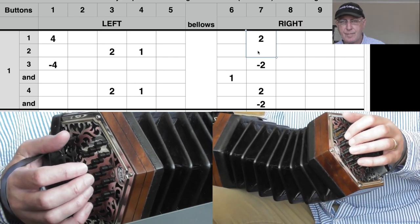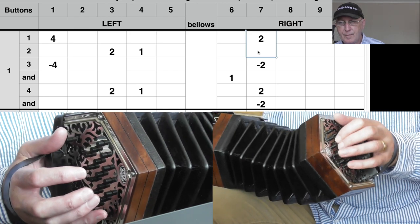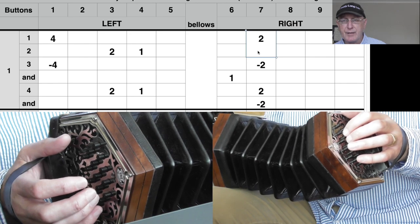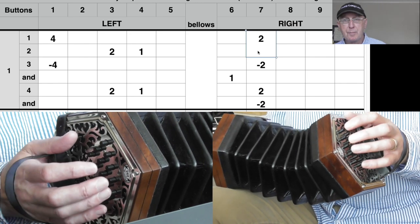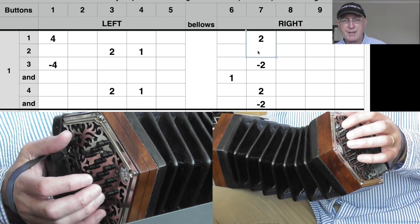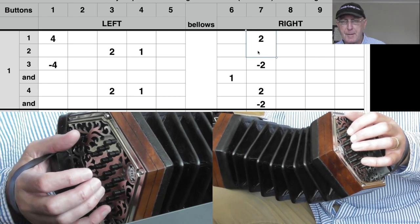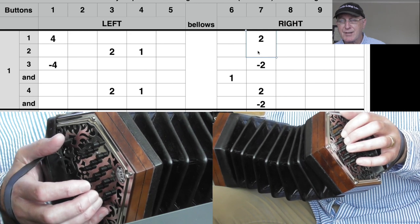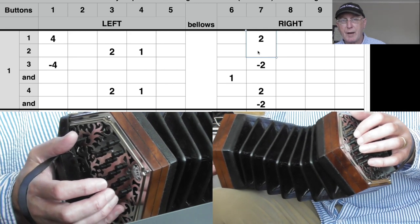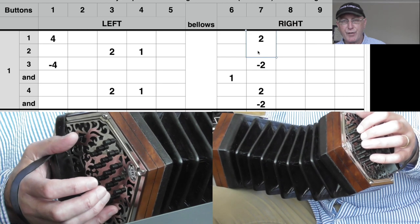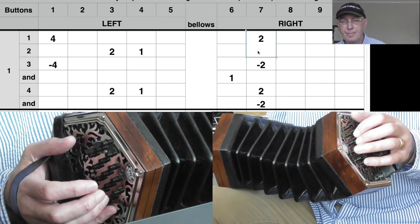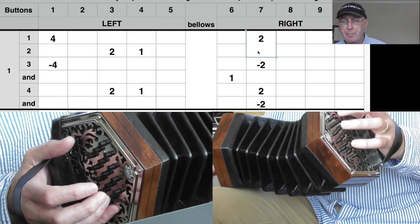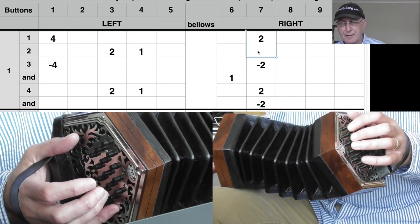So you've got button number one, finger four, push, buttons three and four, fingers two and one, push together. So that's your first oom part. And then do exactly the same thing again, but the button one is pulled instead of pushed.